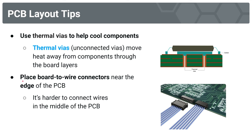Our next tip is to place board-to-wire connectors near the edge of the PCB. If you have external wires which are to connect to your PCB, you do not want to place the terminals for those wires in the middle of the PCB — the wires would have to jump over components and it would be a mess. It is much harder to connect wires there. So we strategically place our board-to-wire connectors along the edges of the PCB.